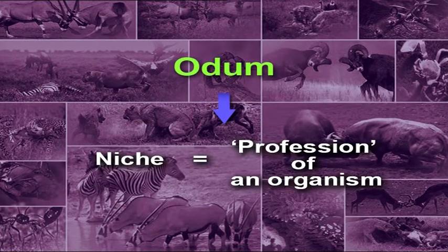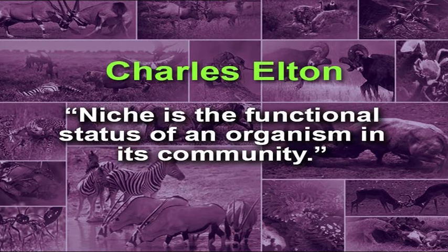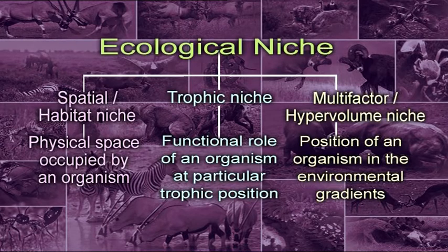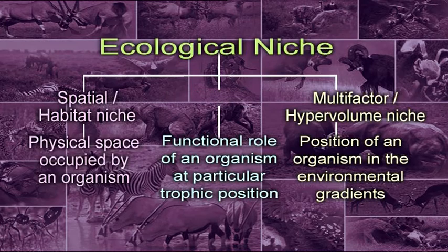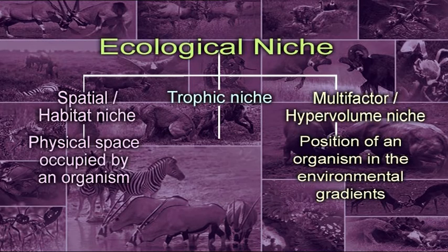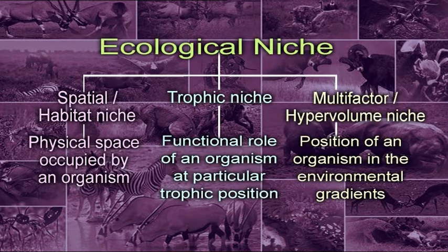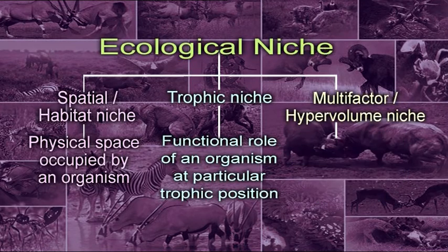Odum considered niche as the profession of an organism. According to Charles Elton, niche is the functional status of an organism in its community. The ecological niche of an organism concerns not only the space where it lives but also what it does — how it transforms energy, responds to and modifies its physical and biotic environment, and how it is constrained by other species. There are three different aspects of ecological niche: spatial or habitat niche, trophic niche, and multi-factor or hyper-volume niche.